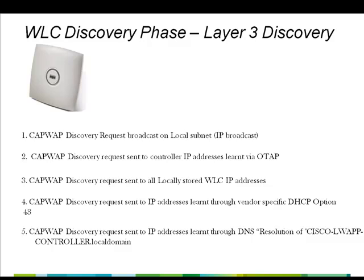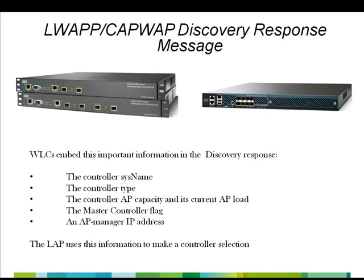During the Layer 3 wireless LAN controller discovery, the access point always completes all the steps discussed in order to build a list of candidate controllers. After the access point has completed the discovery step, the access point selects a controller from the candidate list using a selection algorithm. The discovery response message sent by a controller contains certain important parameters used in the controller selection process. Some of these parameters include the controller sysname, the controller type, the controller's AP capacity and its current load, the master controller flag, and the AP manager IP address.